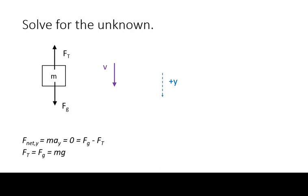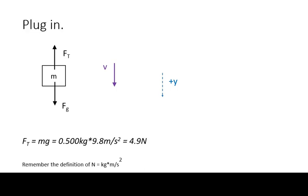We solve for the unknown. When acceleration is zero, the magnitude of the tensional force will equal the magnitude of the weight. We plug in with units and get our answer. Please be aware of the conversion of units from kilograms meters per second squared to Newtons.